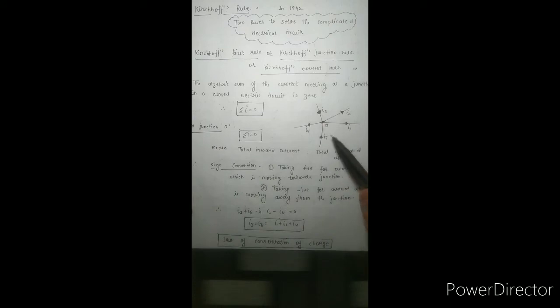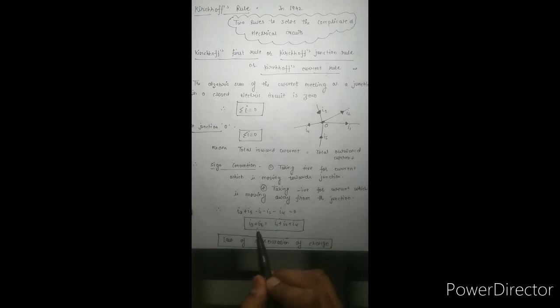Using the sign convention rule: current moving towards the junction is taken as positive, and current moving away from the junction is taken as negative. So I3 and I5 are positive and I1, I2, I4 are negative. Solving gives I3 plus I5 equals I1 plus I2 plus I4 — total inward current equals total outward current. This rule is the law of conservation of charge.